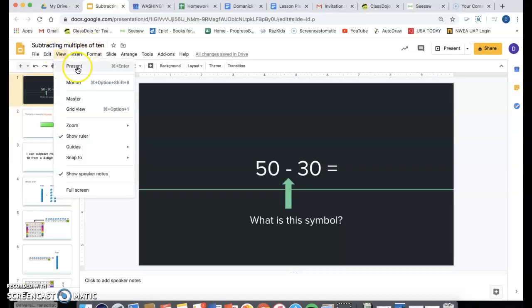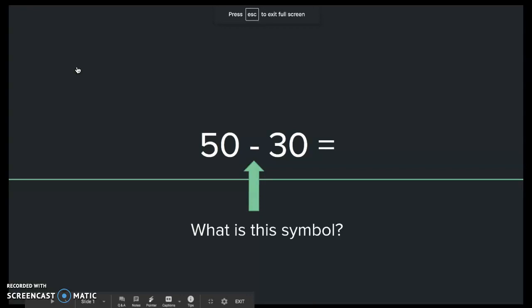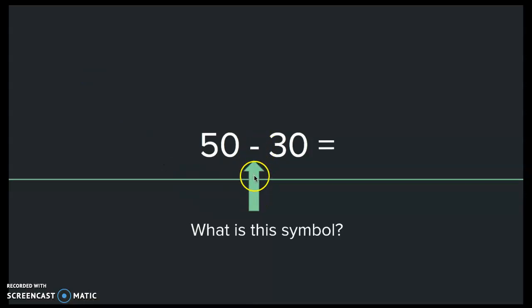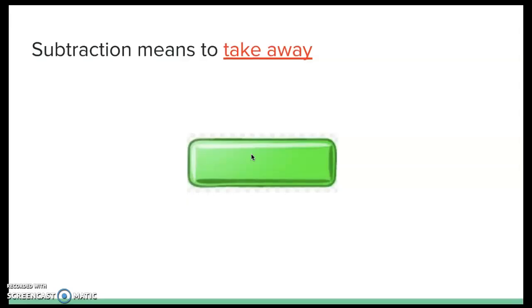Hi, first graders. Today we're going to talk about something new in math, something we haven't done. Before we begin, I would like to point to the symbol that the arrow is also pointing to, and I want you to tell an adult what that symbol means to you. If you've said this symbol is a subtraction symbol and it means to take away, you are correct.